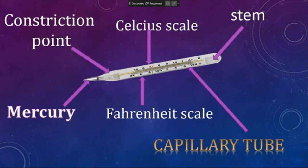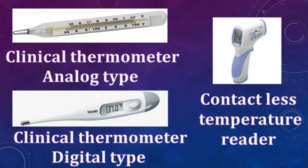The constriction point does not allow mercury to flow back after measuring temperature. The glass body of the thermometer is called the stem. There are three different types of thermometers: the clinical thermometer analog type, the clinical thermometer digital type, and the contactless temperature reader, which was already invented but has been recently used for testing COVID-19 and body temperature.